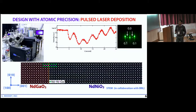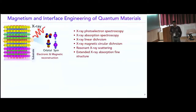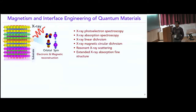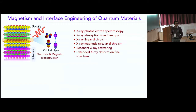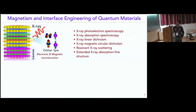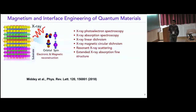Once we grow these interfaces, we use various X-ray-based techniques to understand the interfacial electronic and magnetic structure, since many conventional techniques don't work at this scale. These include X-ray photoelectron spectroscopy, X-ray absorption spectroscopy, and X-ray resonant scattering. The first part of my talk is based on a recent paper focused on these measurements.